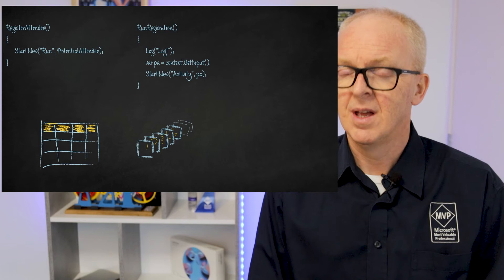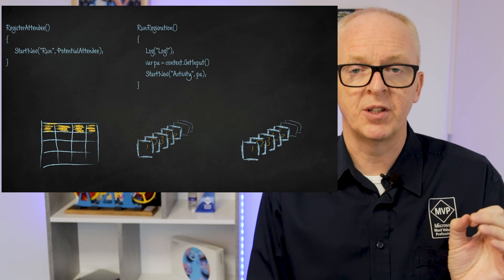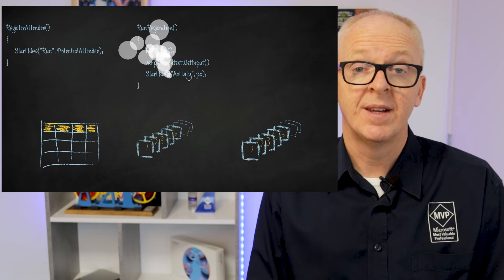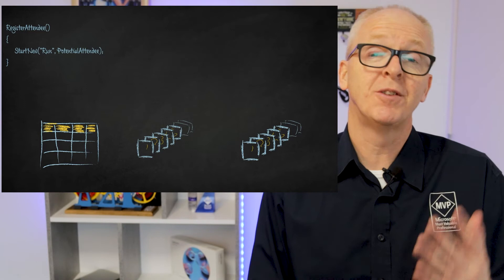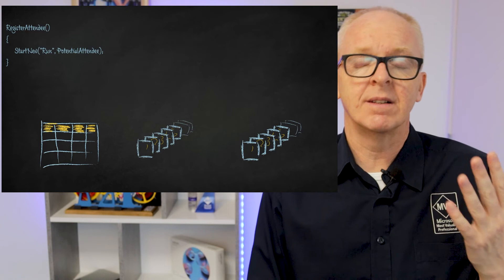The same thing happens here as with the orchestration: data is pushed to the table and then an item is pushed on a different queue — let's call it the activity queue. And then... wait for it... this C# method dies. It is no more. It has ceased to be, it has expired and gone to meet its maker.